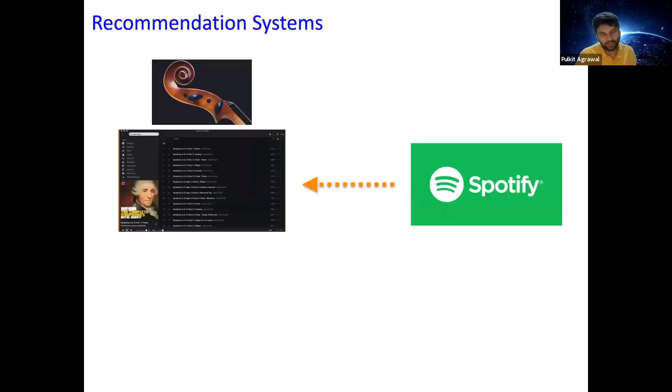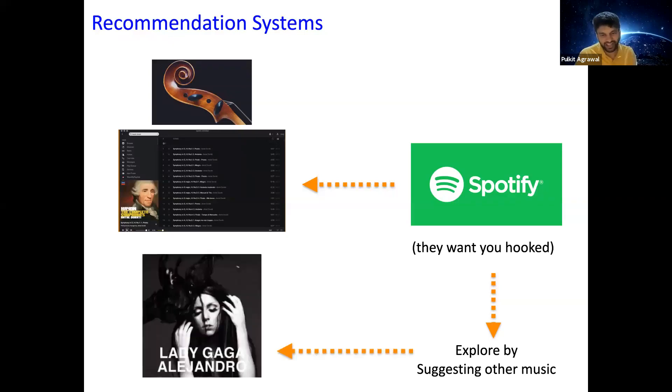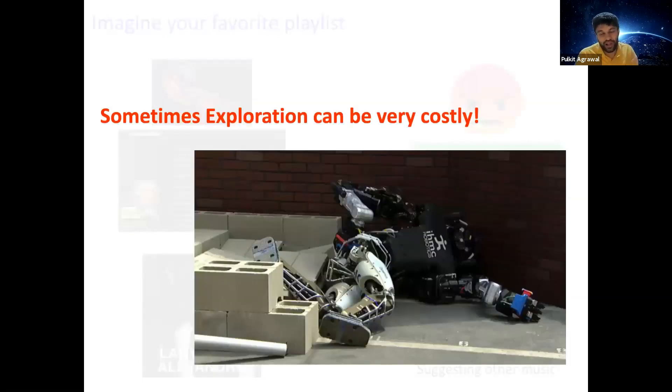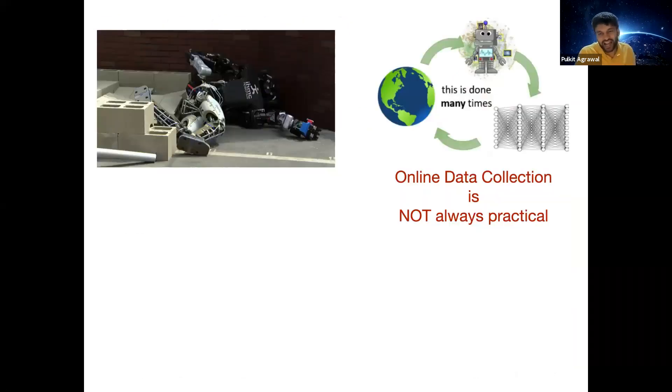As an example, suppose you have Spotify and you are giving music recommendations and someone listens to classical music. Spotify really wants to engage customers, but they also want to explore so that they can discover new music interests. So Spotify would suggest new music, but what if Spotify suggested Lady Gaga, as far away from classical music as possible? This may not go well with the customer. You might end up losing the customer because you were trying to figure out his interests. But this can also become very costly in some other applications, for example, a robot crashing down. So in many scenarios, just collecting online data is not always practical.